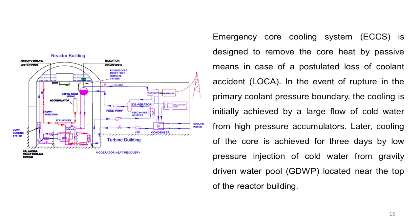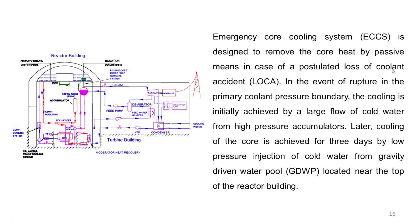Regarding the emergency core cooling system of the AHWR: in the event of a rupture of any primary coolant boundary, initially water flows from high-pressure accumulators. Then the gravity-driven water pool continues to cool the reactor for nearly three days, with a small low-pressure injection pump available to pump water into the core. Since the system is passive even under normal conditions, it is also passive under any power failure condition.